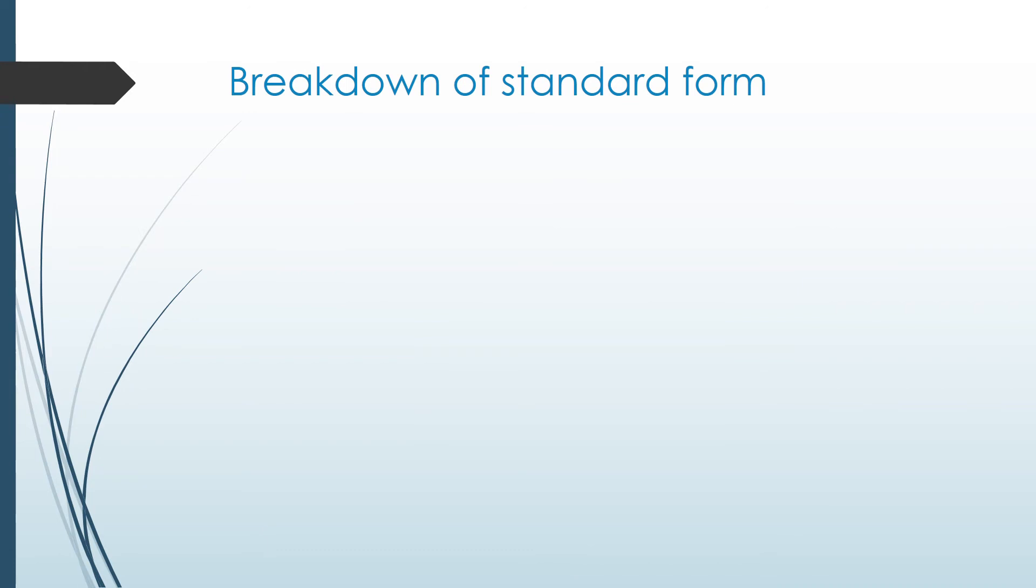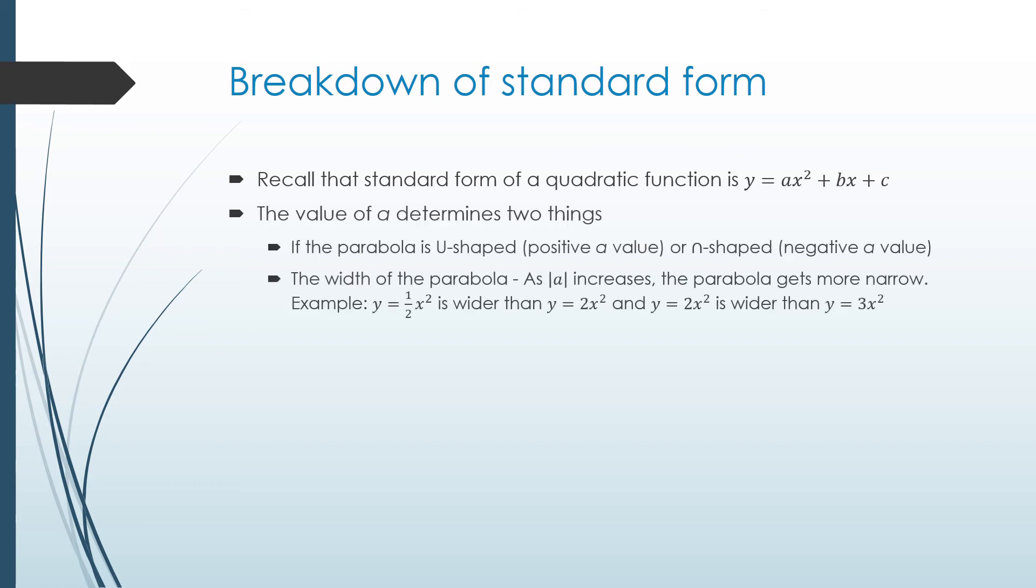Let's talk about breaking down standard form. Recall that standard form of any quadratic function is y equals ax squared plus bx plus c. The a value determines two things. As we've discussed before, if the parabola is smile shaped, that means we have a positive a value. If it's frown shaped, we have a negative a value.